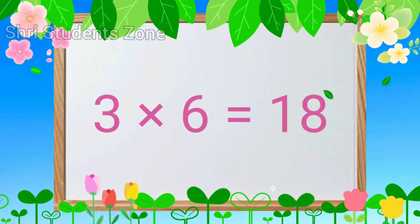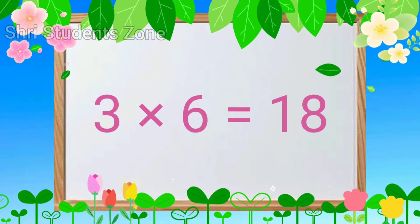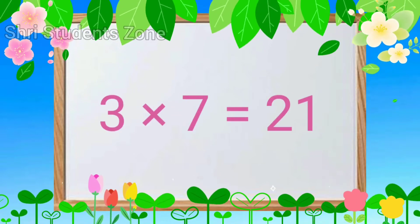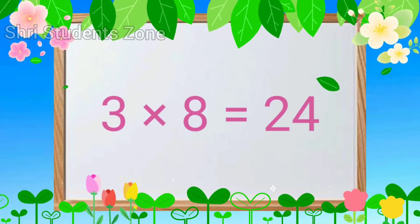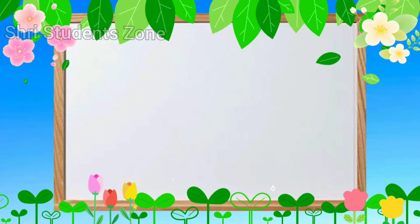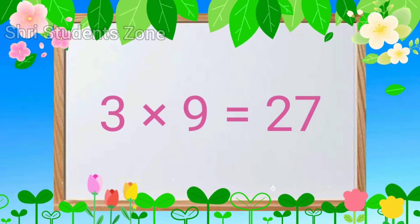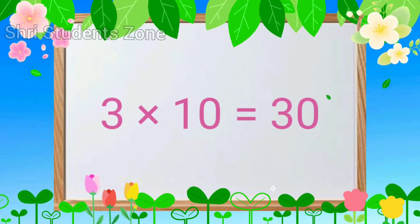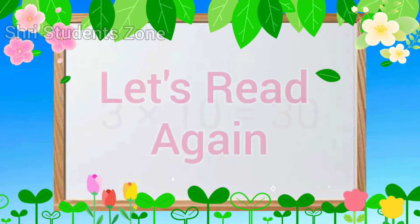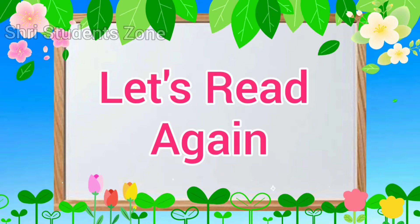3-6s are 18, 3-7s are 21, 3-8s are 24, 3-9s are 27, 3-10s are 30. Let's read again.